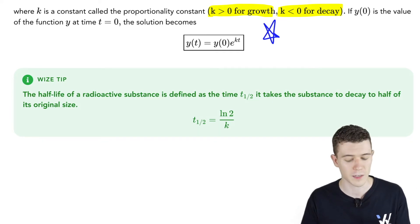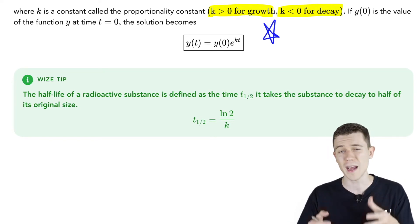You can often calculate it without memorizing this, but if you ever want the half-life for a radioactive substance, it's given by natural log of 2 over k. k is that growth factor or that proportionality constant.